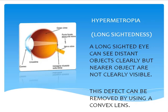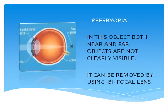Next, presbyopia. In this defect, both near and far objects are not clearly visible. The corrective lens used is a bifocal lens.